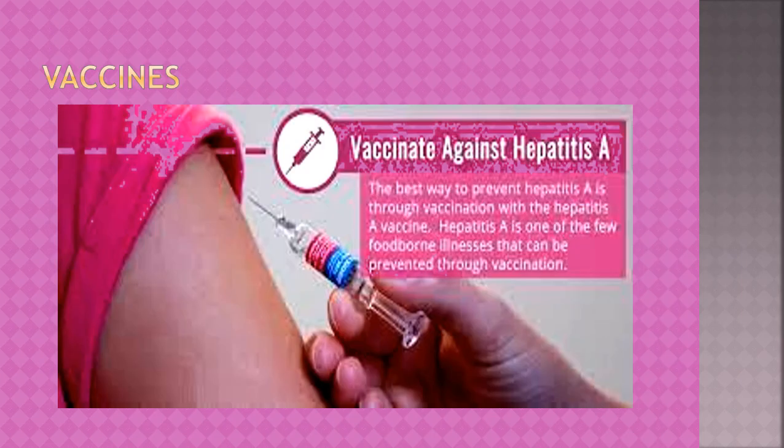Hepatitis A causes yellowing of the skin, yellow urine, and yellow eyes — elevation of color. The best way to prevent hepatitis A is through vaccination with the hepatitis A vaccine. Hepatitis A is one of the few foodborne illnesses that can be prevented through vaccination.